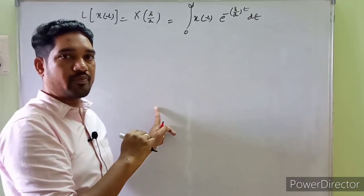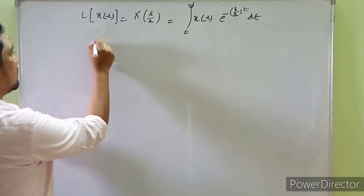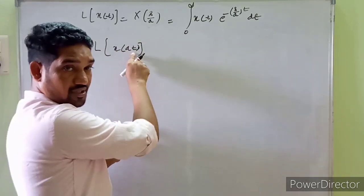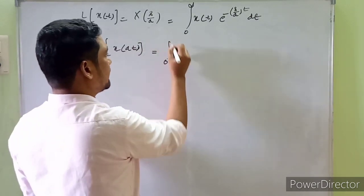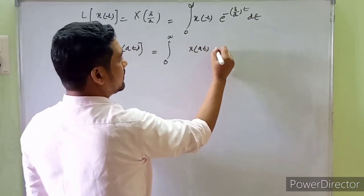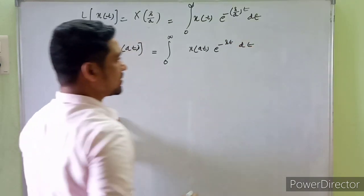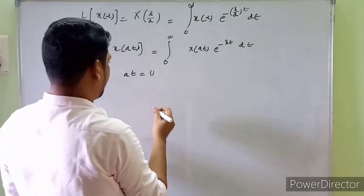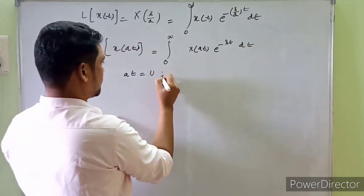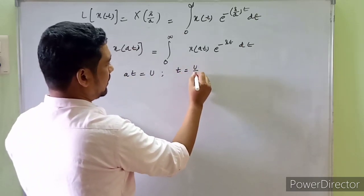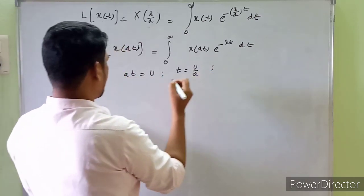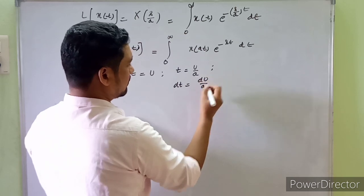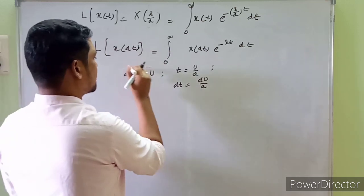This is a very important point for beginners working with Laplace transforms. With this understanding, we can clearly understand an important property. For example: what will be the Laplace transform of the given function x(a*t)? According to the definition it would be: integral from 0 to infinity of x(a*t) multiplied with e to the minus s*t dt. We need to substitute a*t — let a*t equal u.